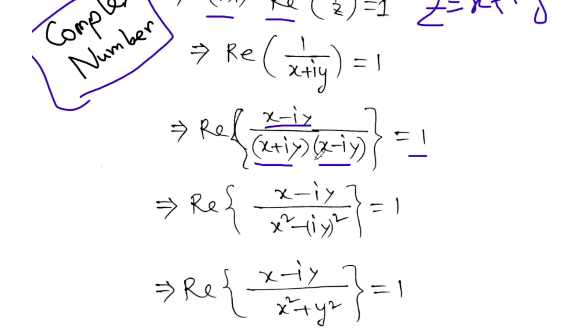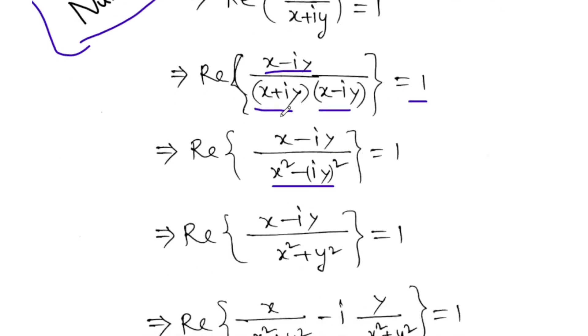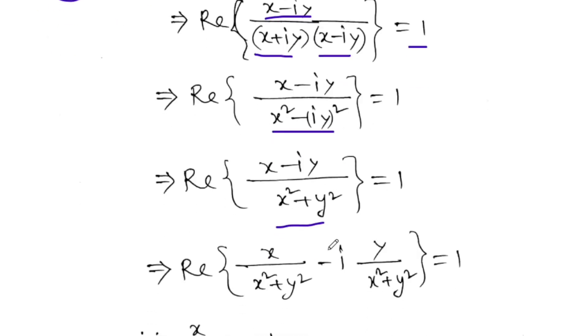Using the formula a squared minus b squared, I get X squared minus (iY) squared. Since i squared equals minus one, this becomes X squared plus Y squared in the denominator. So we have X over (X squared plus Y squared) minus i times Y over (X squared plus Y squared). This is the real part and this is the imaginary part.